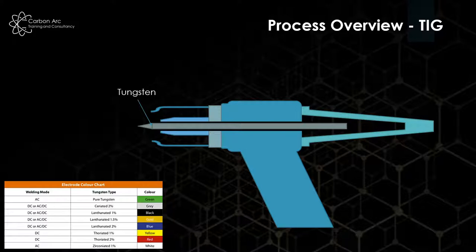The problem with thoria is it's slightly radioactive, so if we breathe that in it can potentially cause damage to our lungs. When we sharpen thoriated electrodes, that should be done in a water-cooled and shrouded grinding head.